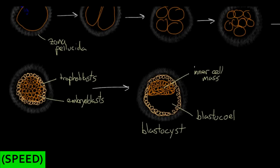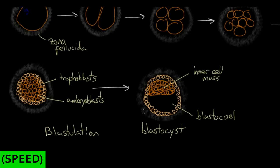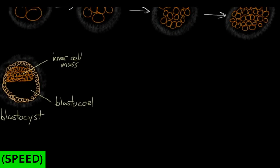We name this whole process after you — after cleavage, the process is called blastulation. Also about this stage in blastulation, your zona pellucida starts to disintegrate away. I'm going to draw little bites being taken out of it here as it falls away and disintegrates. That's going to be important later on because you can't be stuck in this thing forever. In the next step of blastulation, you actually just lose it completely.